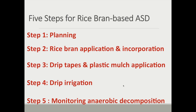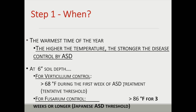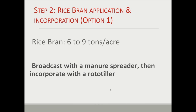When to do ASD — ideally at the warmest time of the year, since higher temperatures result in stronger disease control. We can't do it when the soil is too cold — it just doesn't work. For controlling Verticillium dahliae, we recommend soil temperature above 68°F at six inches depth for at least the first week of treatment. For Fusarium oxysporum, data from our Japanese colleagues suggest soil temperature needs to be much higher — above 86°F for three weeks. Deciding when you can fit it into your operation is a critical step.